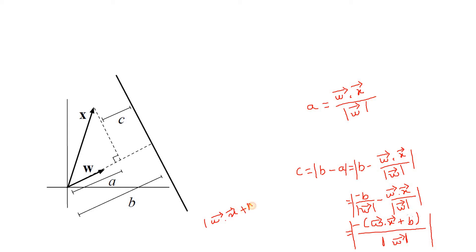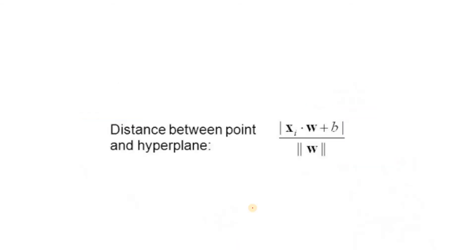plus b, this one will be inside mod, by mod of omega. This is what we derived. Here I have written the distance between a point and the hyperplane is x_i, any position vector of a point, dot w vector plus b, this is inside mod by mod of w.